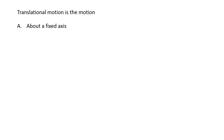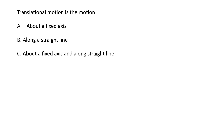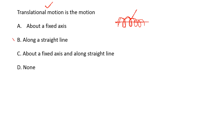Next: translational motion is the motion of — options are: about a fixed axis, along a straight line, about a fixed axis and along a straight line, none of the above. A translational system is defined as the system in which the motion is along a straight line. So option B is the right answer — translational motion is the motion along a straight line.